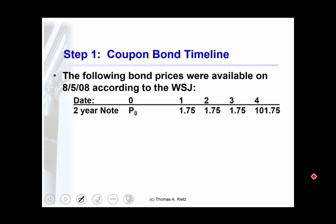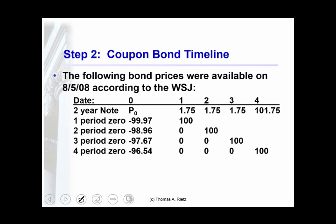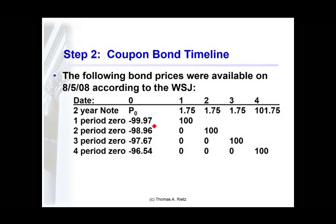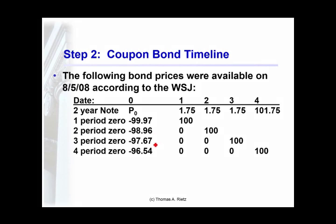Then you look up bond prices for zero coupon bonds where there exists one cash flow at each of those future dates. The prices of those at the time were $99.97, $98.96, $97.67, and $96.54.